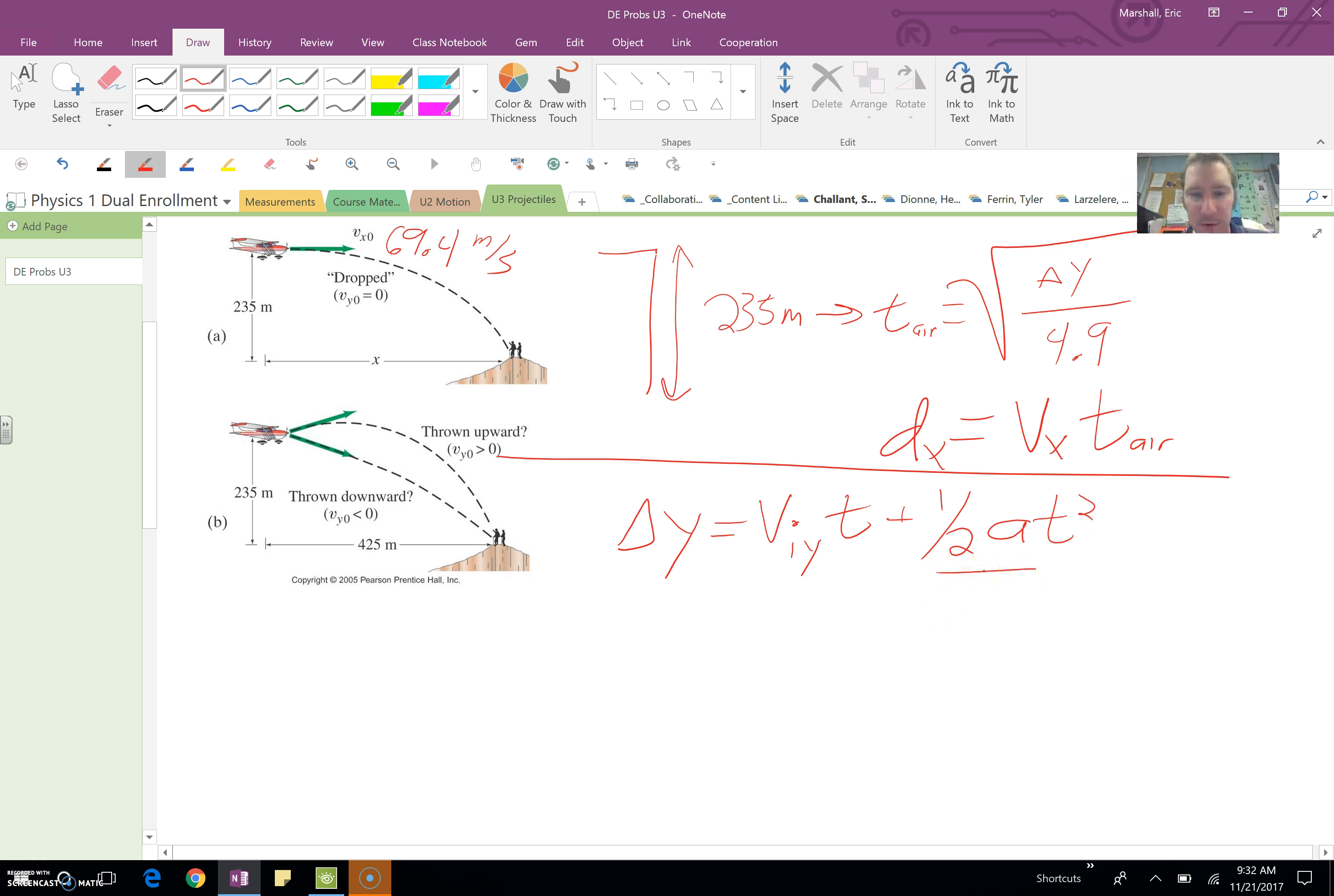We don't know what this time is though. So what we'll do is we'll solve, we can figure something out about time because if this thing is still traveling with a horizontal speed of 69.4 meters per second and we know it has to go through a displacement of 425 meters, well then we can figure out the time in the air. Its velocity is displacement over time, so if you're solving for time it'll be your displacement divided by your velocity. So we'll get our time there.